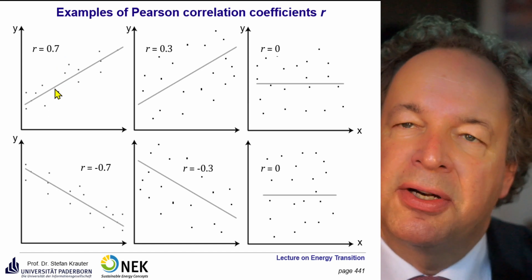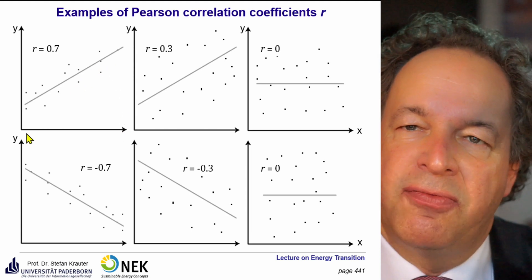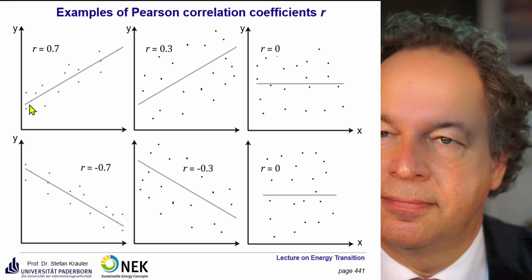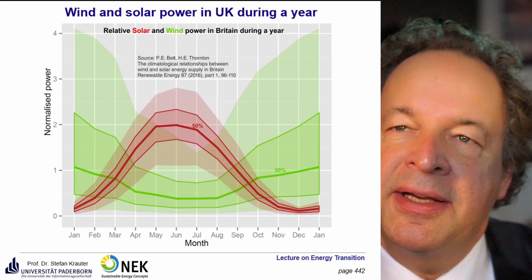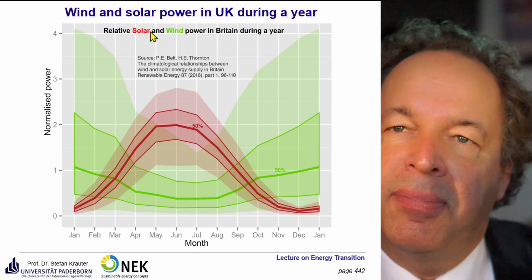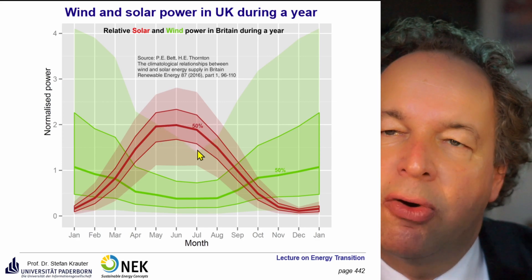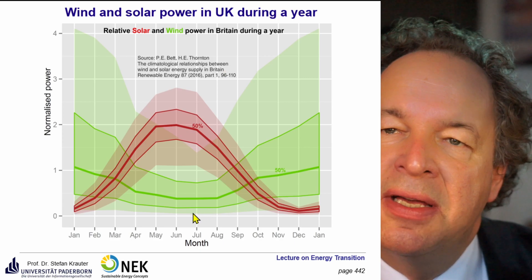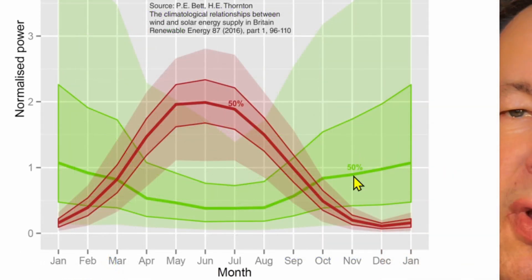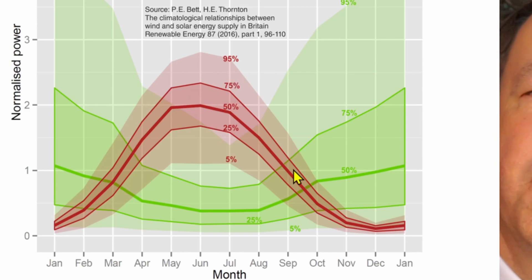A positive correlation would not be helpful because if we had a lot of solar energy, we would also have lots of wind energy at the same time, and vice versa. Here you see some examples — these are measurements taken in the UK. You have the relative solar power in red with some tolerances; the dark shading represents the tolerance band of 50% of the values. The same applies for wind power. You can extend it to 75% and 90%, but you clearly see the tendency — it's anti-correlated, and that is really helpful.